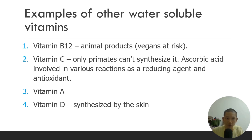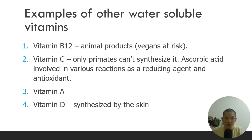Vitamin C becomes ascorbic acid in the body, acting as a reducing agent and antioxidant in various reactions. Antioxidants combat reactive oxygen species and oxidative stress — without them, cells age faster, causing wrinkles and accelerated aging. Vitamin A is well known for its role in eye health. Vitamin D is synthesized by the skin upon exposure to sunlight.